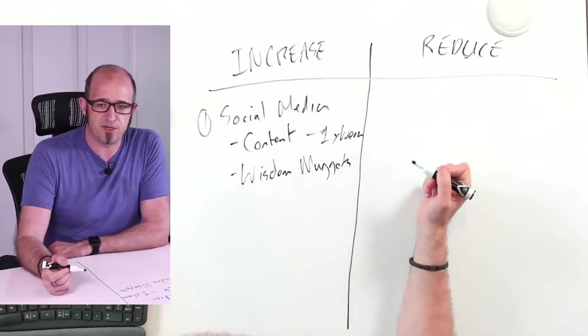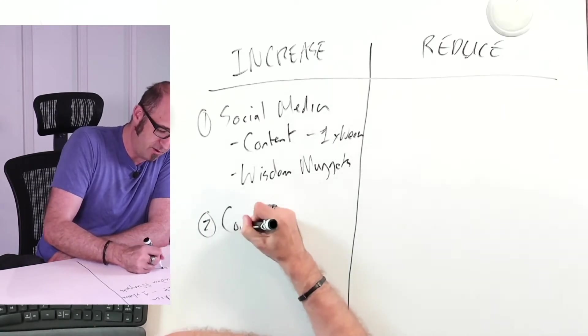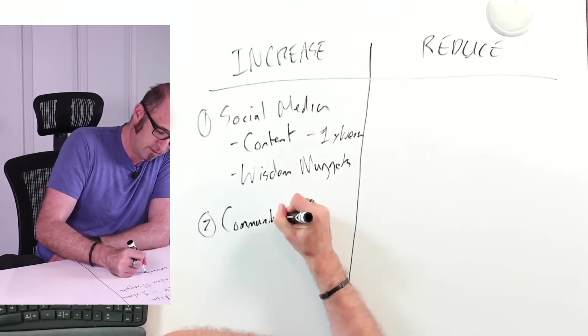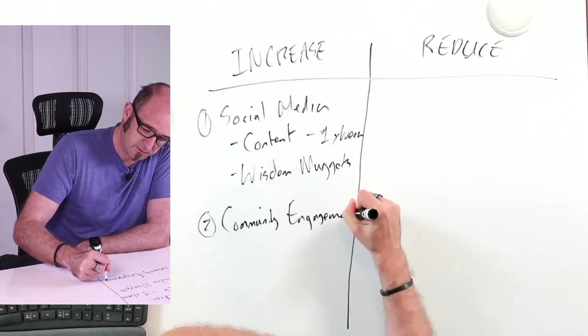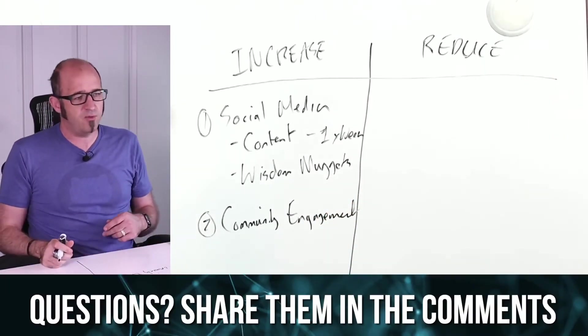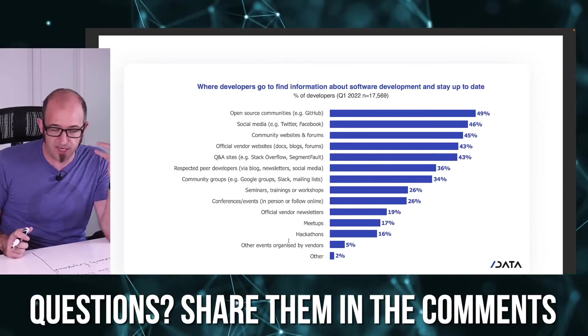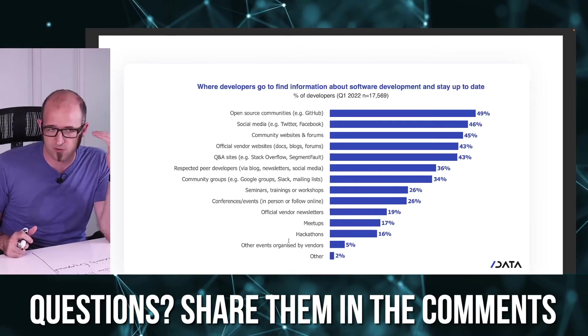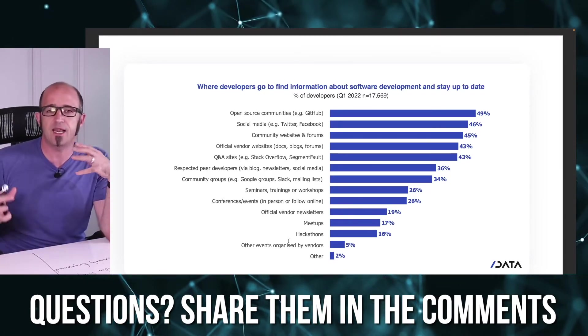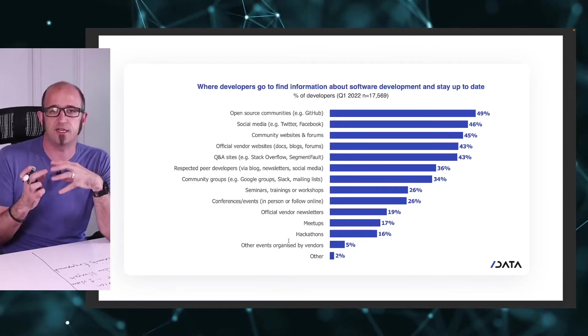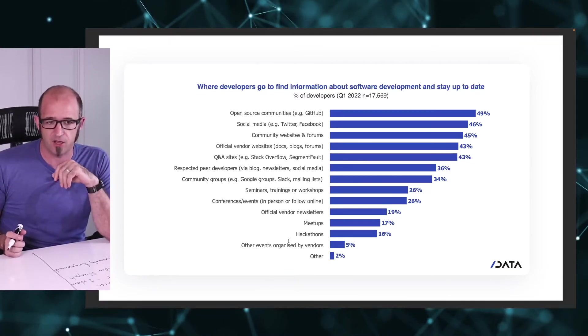This is the kind of thing that you're going to want to focus on when I'm talking about wisdom nuggets, which is really just getting some useful information out there that people can easily start consuming. The other thing that I'm going to recommend you do is focus on community engagement. If we go back to the data that we looked at earlier, on this very first slide I shared at the beginning of this video, open source communities right at the top, the third one, community websites and forums. Clearly being in a social group setting online is a great place where people stay up to date with what's going on.